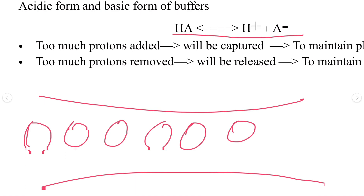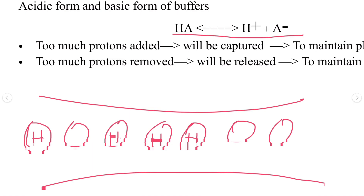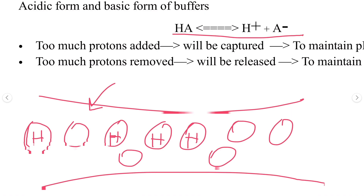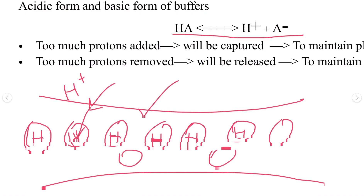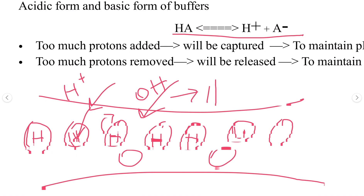Let's visualize it. In a solution like blood that has a buffer system, some buffer molecules are loaded with protons and some are free. If we add acid — which has protons — those protons are captured by the free unloaded molecules. If we add base (OH⁻), a loaded molecule releases its proton, which reacts with OH⁻ to form water. The pH remains stable.